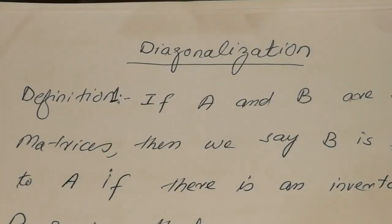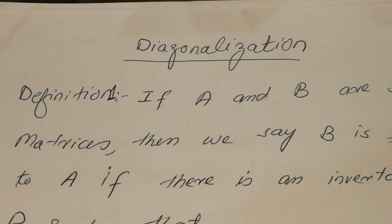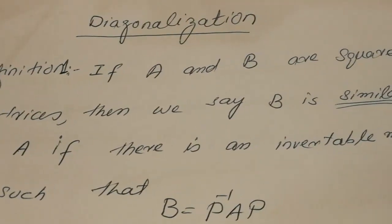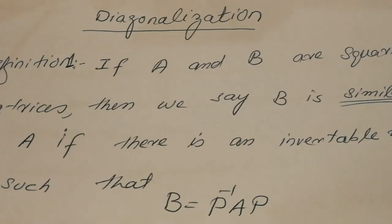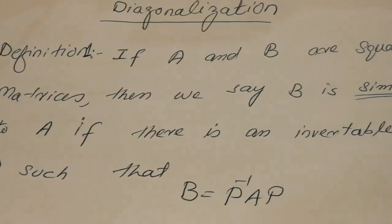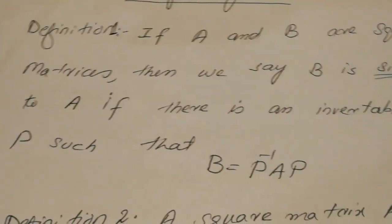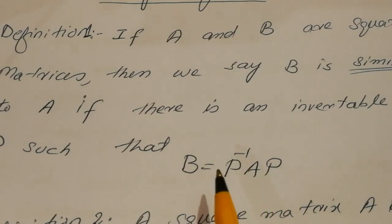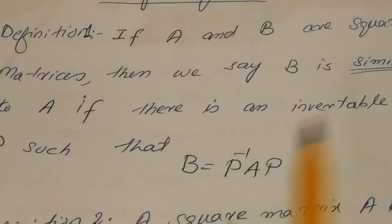Assalamu alaikum dear students. In this video I am going to discuss an important topic that is diagonalization. Before explaining diagonalization I would like to discuss a definition. If A and B are square matrices, we say that B is similar to A if there is an invertible matrix P such that B equals P inverse AP. This is the definition of a similar matrix.